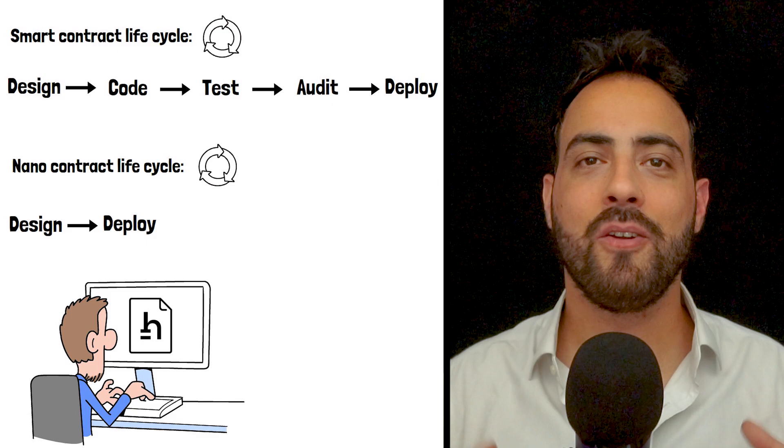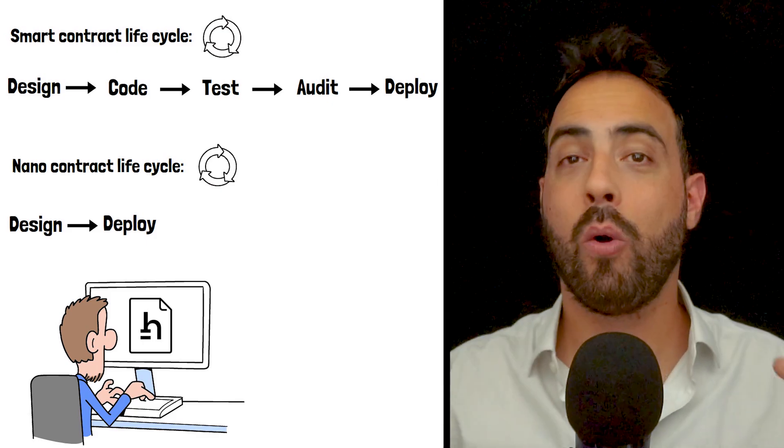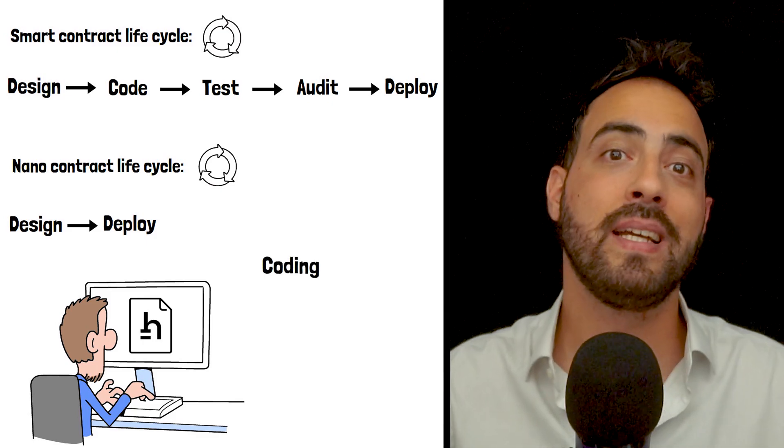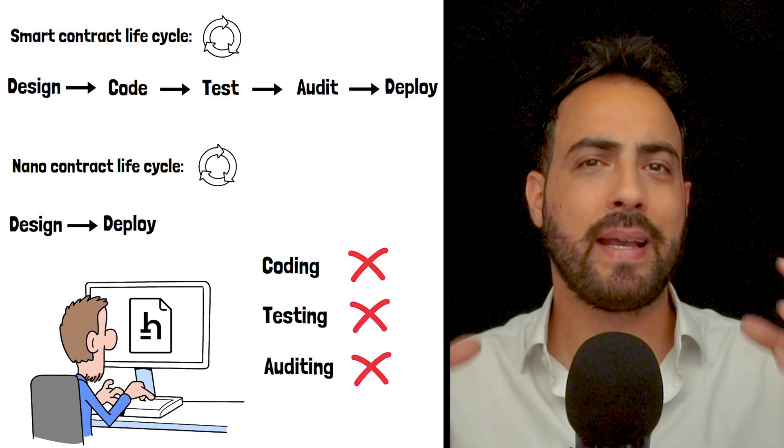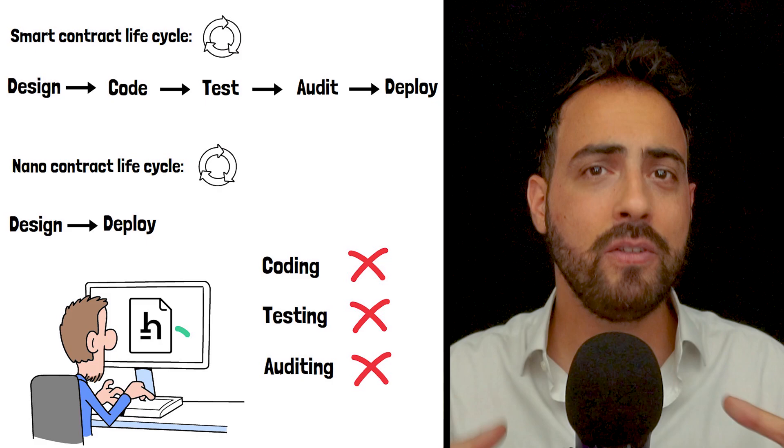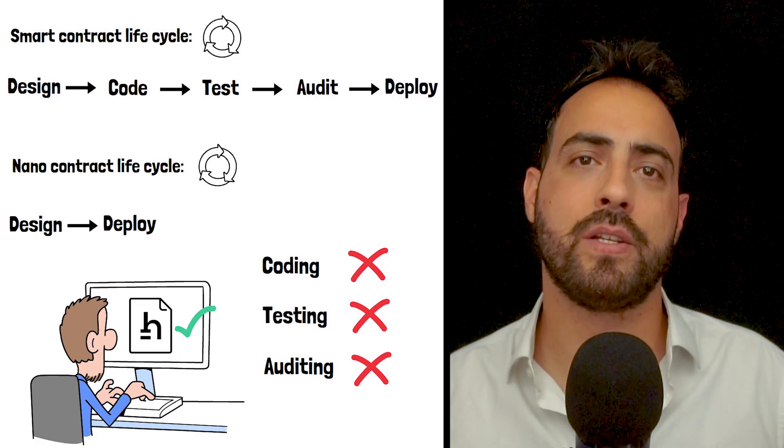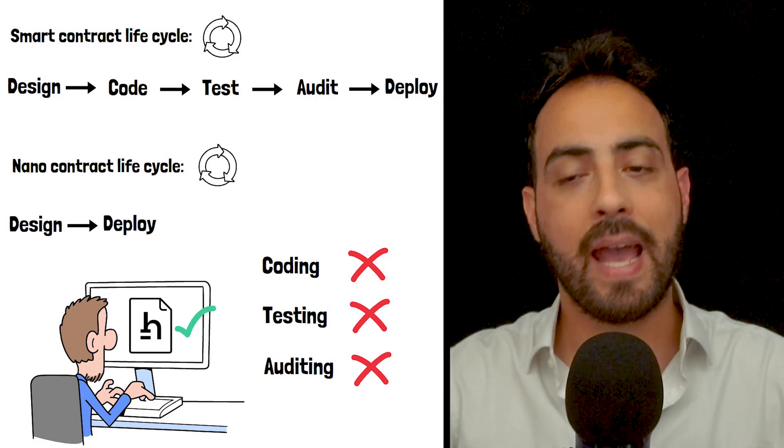Once deployed, the nano-contract can be used immediately, ultimately saving users time from coding, testing, and auditing. The blueprint-based approach makes contract creation easy even to users without programming knowledge while maintaining security and functionality.